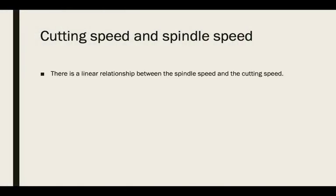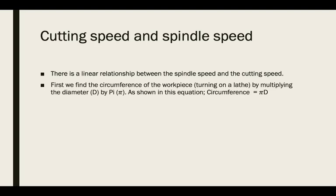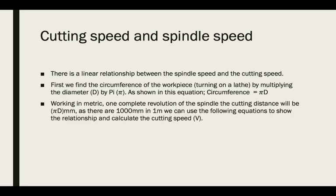There is a linear relationship between the spindle speed and the cutting speed. First we need to find the circumference of the workpiece by multiplying the diameter by pi — circumference equals pi times diameter. Working in metric, one complete revolution of the spindle means the cutting distance will be pi times the diameter in millimeters. Since there are 1000 millimeters in a meter, the cutting speed V equals pi times diameter times spindle speed, divided by 1000, giving the velocity in meters per minute.